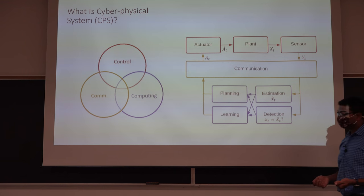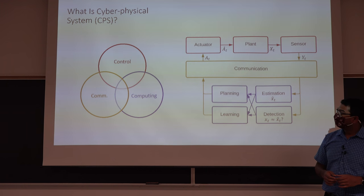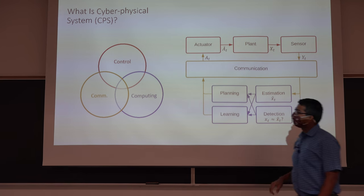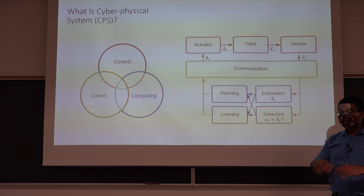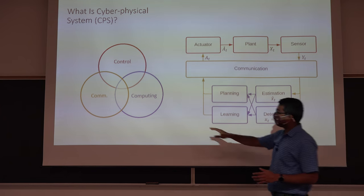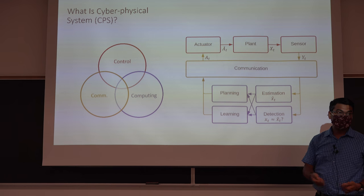A washing machine today has a lot of electronic components — the controller is a microprocessor or FPGA. That adds a computing element to the control system. The computing element looks at data, converts it into bits, which then get converted into analog signals at the motor or sensor level, and then executed on the machine. More microcontrollers and chips started infiltrating our day-to-day systems.